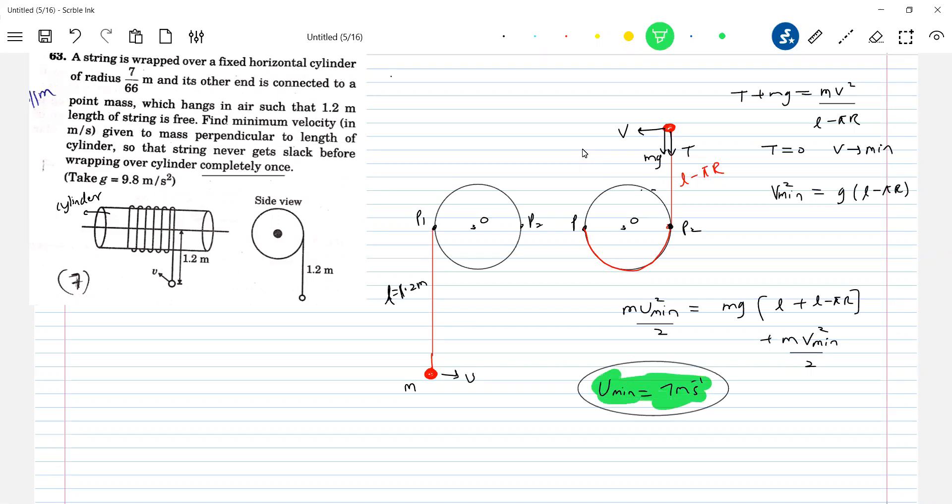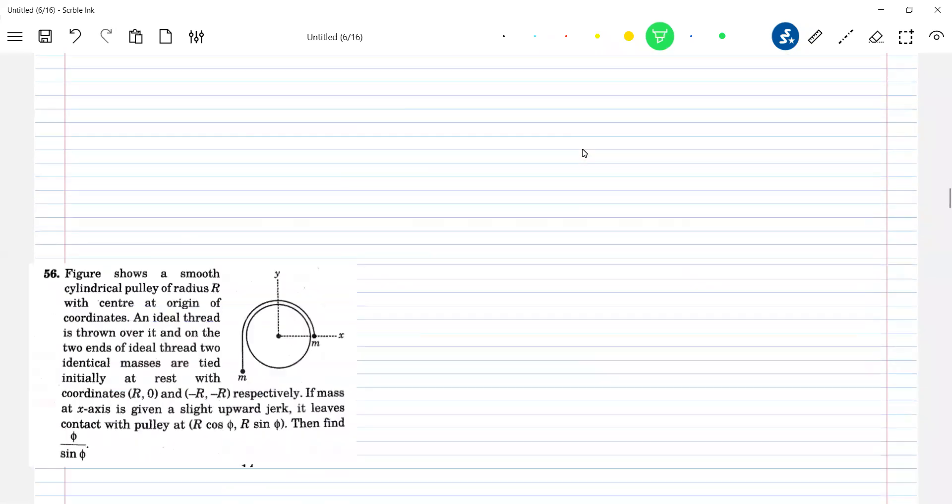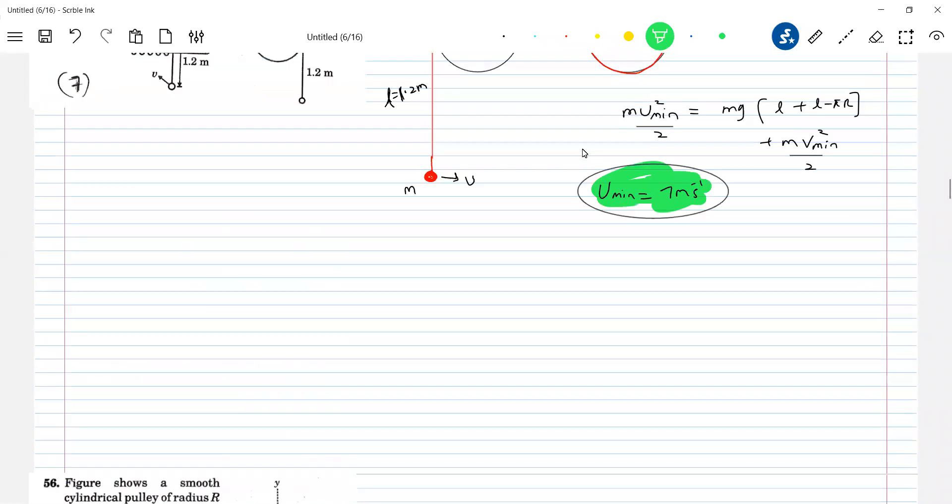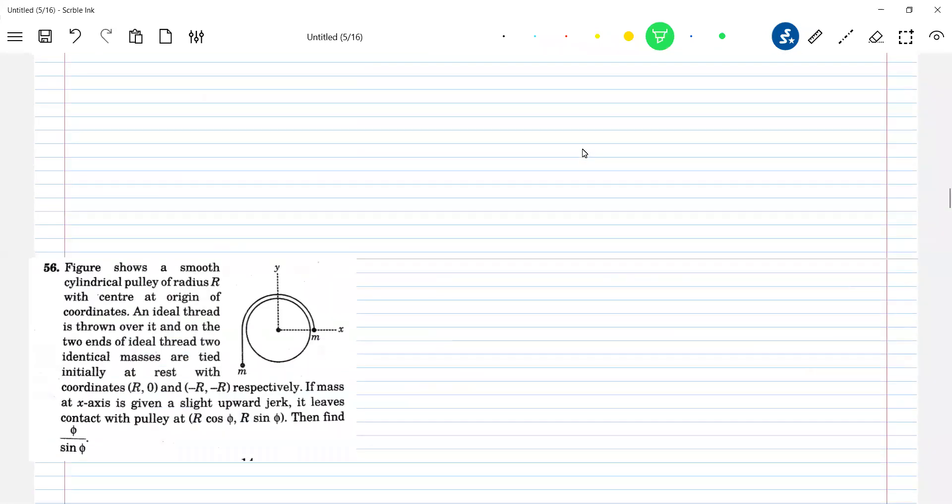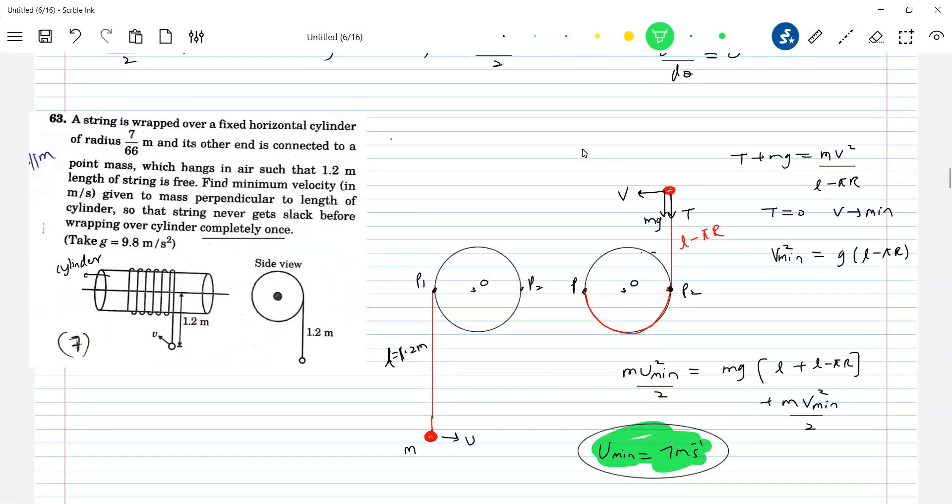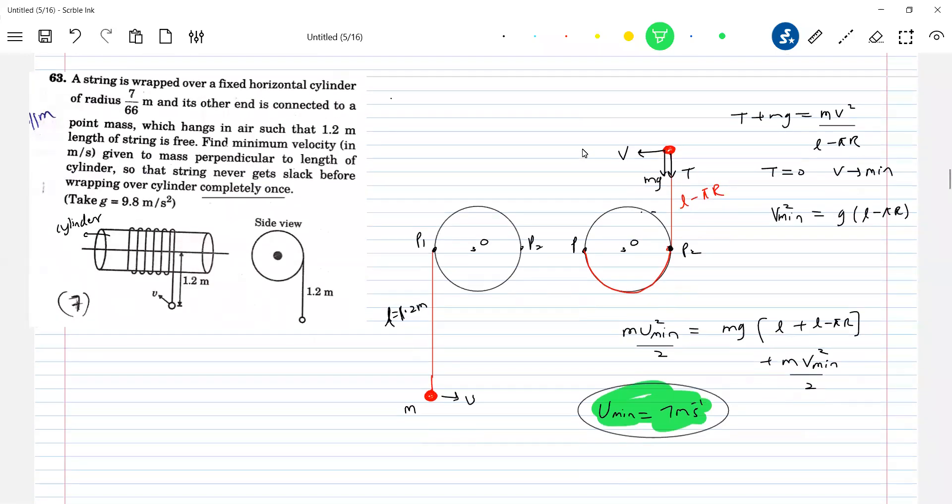Different situations will be there for you. Vertical circle motion. Let's take another one. Can you scroll up? Let's take another one.